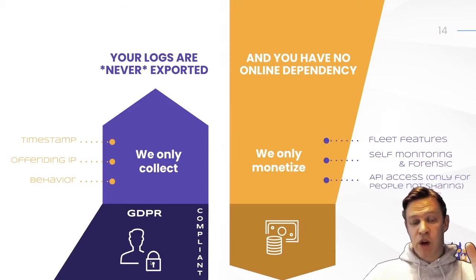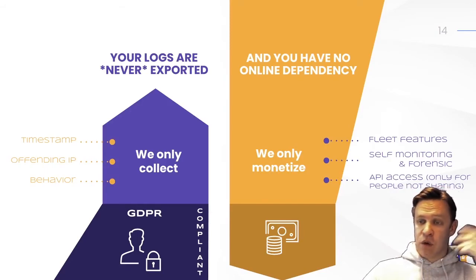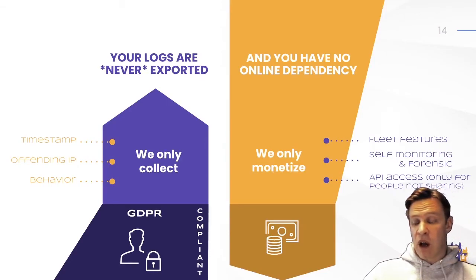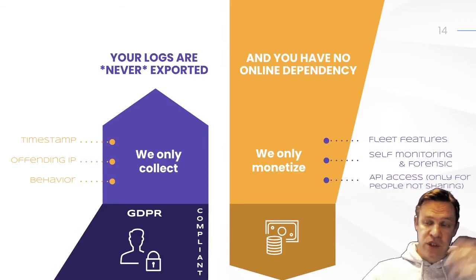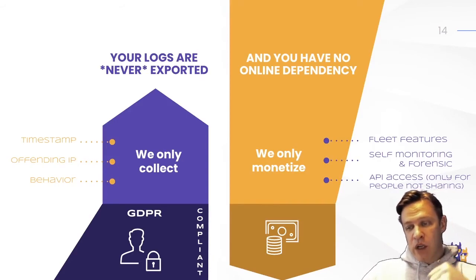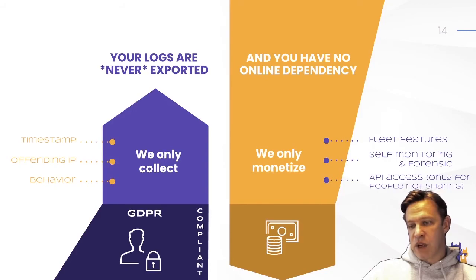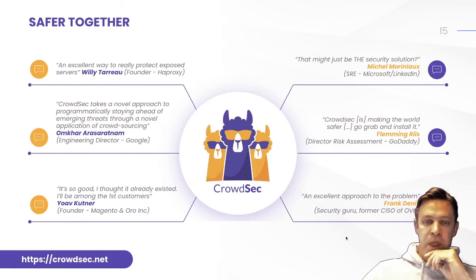It's GDPR compliant because we collect the minimum necessary information to do our work, and you have no online dependency. We only monetize things for business-grade enterprises: fleet features, deploying on thousands of machines, self-monitoring and forensics, API access at massive scale and so on. It's always free for the community. But if people are not sharing with us and want to benefit from the reputation engine, they would have to pay for access — or if they want extended features mainly for big businesses.